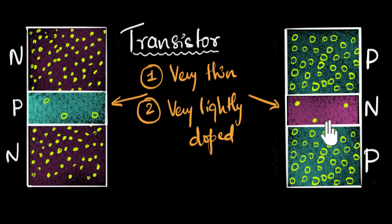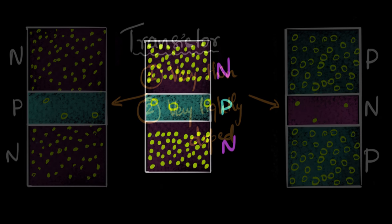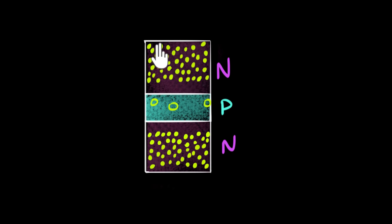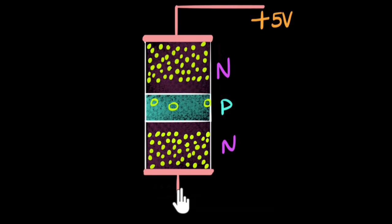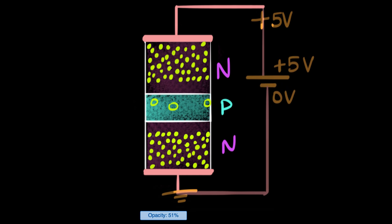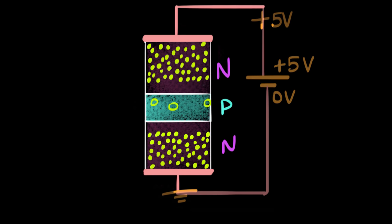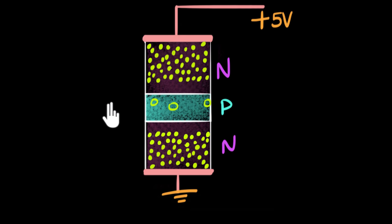Let's look at the NPN transistor and see how it can act as an amplifier. Let's begin by attaching a power supply across its ends with metallic contacts. We attach the positive — say plus five volts — on one end, and the negative (ground) on the other. Now, since we have a positive here, we might expect the electrons to get pulled out and have a current flowing. But in order for that to happen, electrons must continuously flow from one N region into the P region.